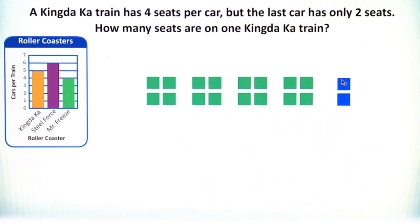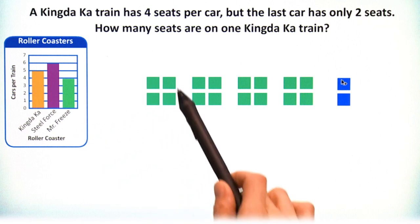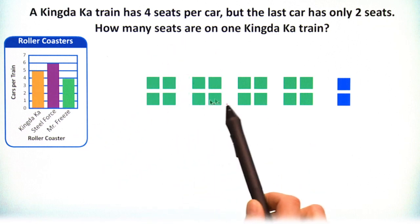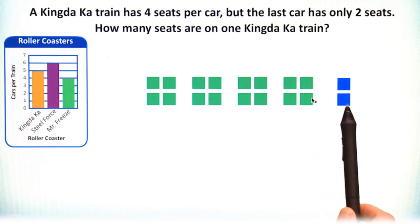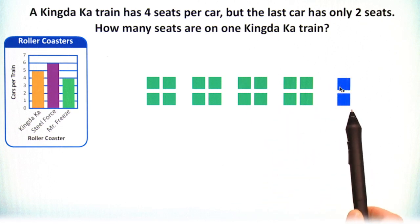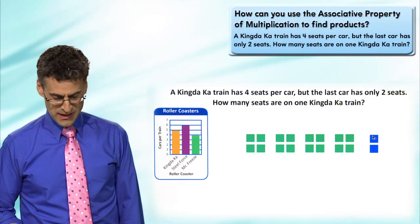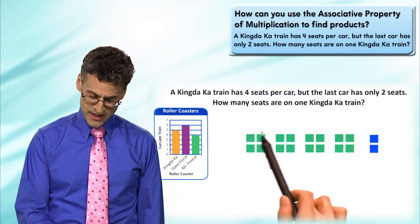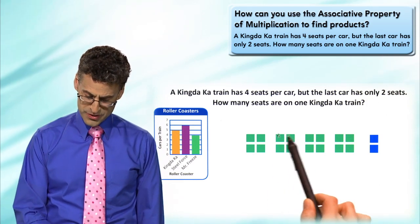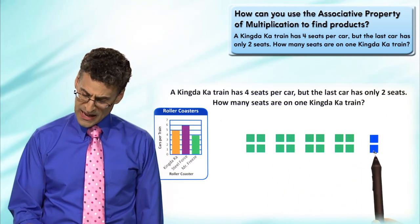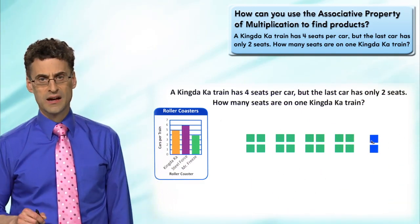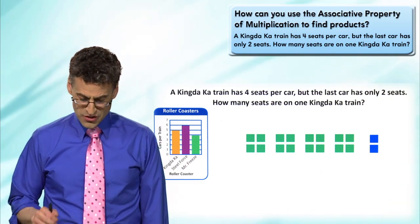So we can see there are five cars, represented right here: one, two, three, four, five. Notice that each car has four seats - you can see that right here - four seats, except for the last one which has only two seats. This represents one train on the roller coaster.